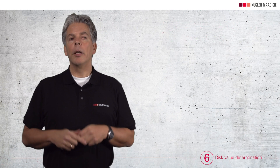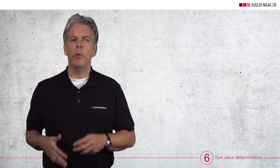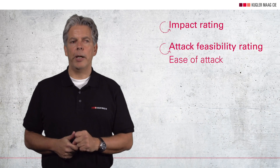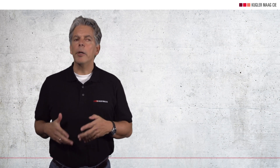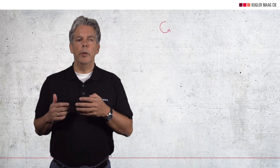Number 6: now it is time for determination of the risk value. For this step, we combine the results of both targets — impact rating (first target) and attack feasibility rating (second target) — to determine the risk value. This considers the impact of the associated damage scenario and the attack feasibility of the attack path. However, we usually have different stakeholders, and some of them assess the risk very differently, so we may have to apply a different risk value for each stakeholder. In any case, we have achieved the third target: we know the risk value.